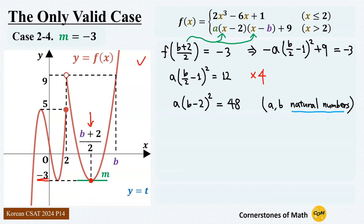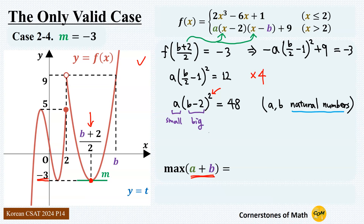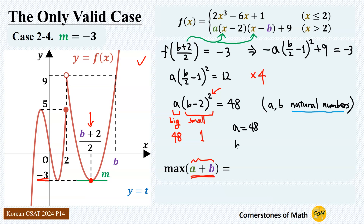With a and b as natural numbers, we want to maximize a plus b. Since (b−2) is squared, we want b−2 to be as small as possible so that a can be as large as possible. If b−2 squared equals 1, meaning b equals 3 or b equals 1, then a can be as large as 48. This is indeed the case that maximizes a plus b. So a equals 48 and b equals 3, giving a maximum value of a plus b equals 48 plus 3, which is 51.